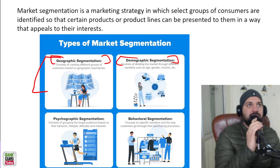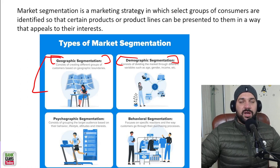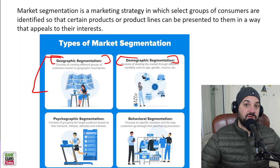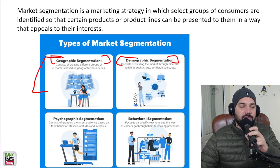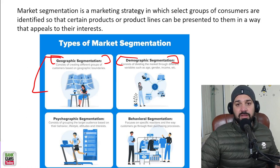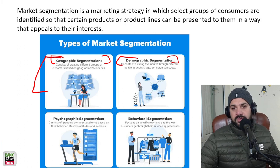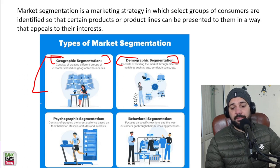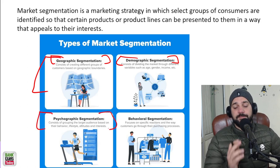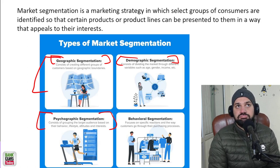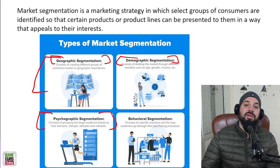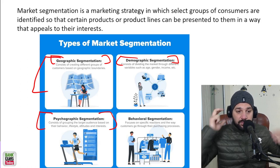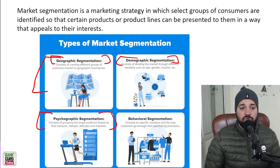Why is segmentation important? For example, if you are trying to market a product such as Kinder Joy, which is generally consumed by kids — if you have done your segmentation properly, you can market your product properly. Psychographic segmentation covers your lifestyle, behavior, and attitude towards life. Maybe you are active in your lifestyle, eat organic or healthy food, and are into meditation — you are going to buy products related to that.